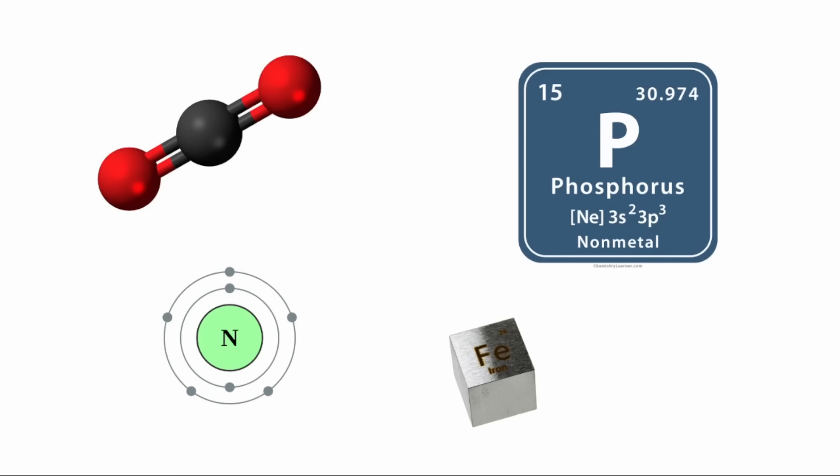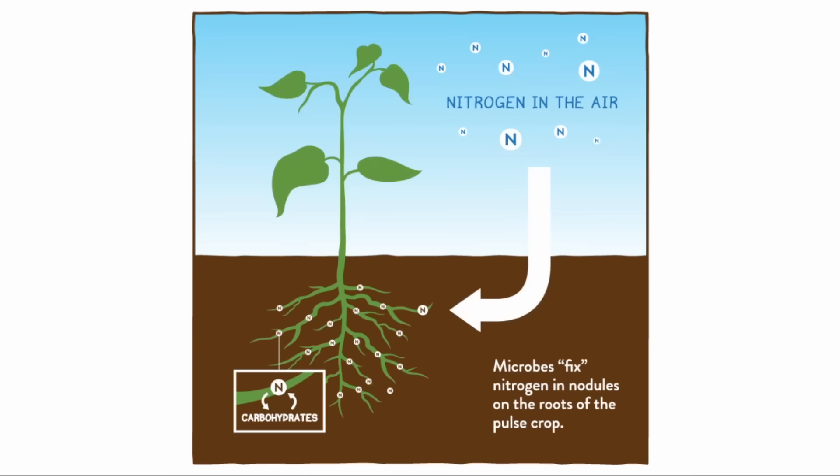To do this, microbes require access to chemicals for building those biochemical structures and molecules. This can include carbon, phosphorus, nitrogen, and many metals depending on the species. If a species acquires these chemicals from inorganic sources, it's said to be fixing that chemical.